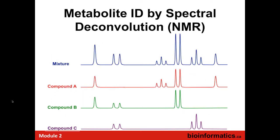We're going to look at NMR first. In metabolomics we're dealing with a mixture. The top spectrum in blue is the mixture — you can see a dozen different peaks, some big, some small, doublets, singlets, and triplets. In red, green, and purple are the pure compound spectra: compound A might be methionine, compound B leucine, compound C adenosine. Those are the different compounds and we have their pure spectra.